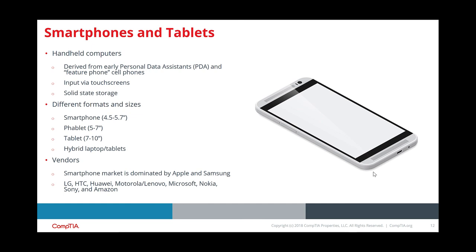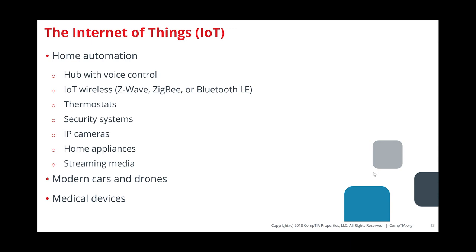Solid-state storage has really grown over the last decade — no worries about dropping it, no moving parts, and it's much quicker to read and write data. For size reference: a smartphone is about 4.5 to 5.7 inches, a phablet is 5 to 7 inches, a tablet is 7 to 10 inches, and some laptops have LTE or a cellular modem built in as hybrids. IoT is also where home automation comes in.